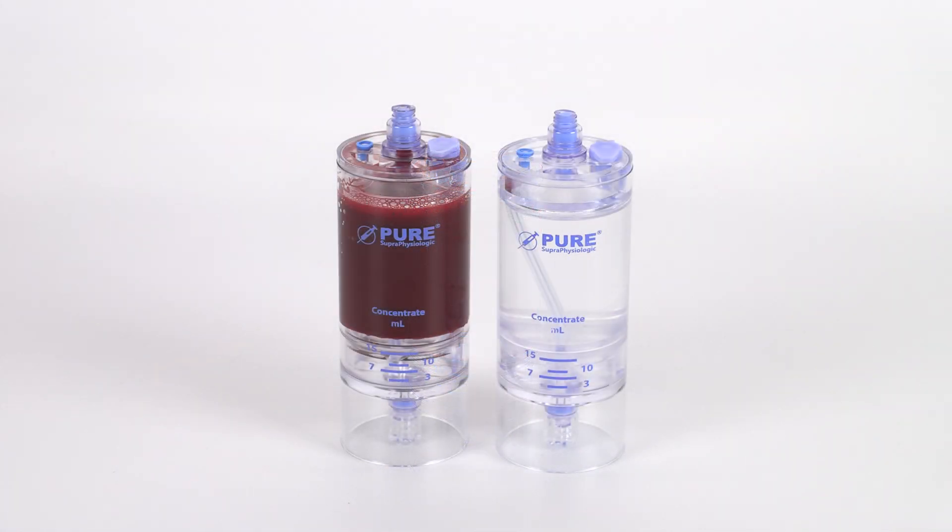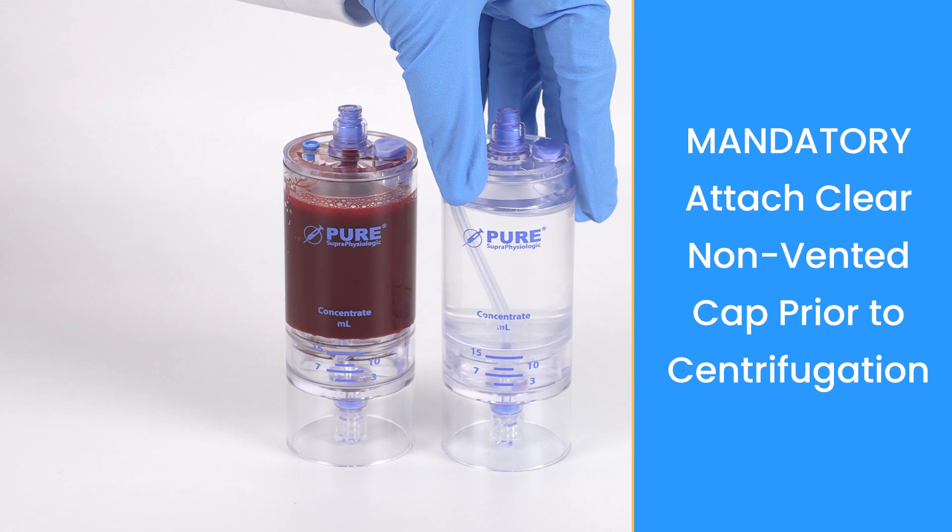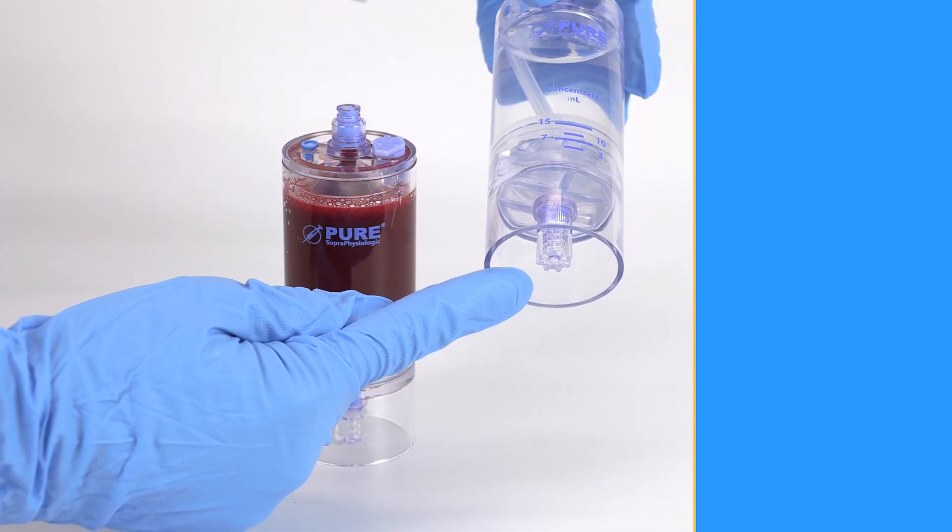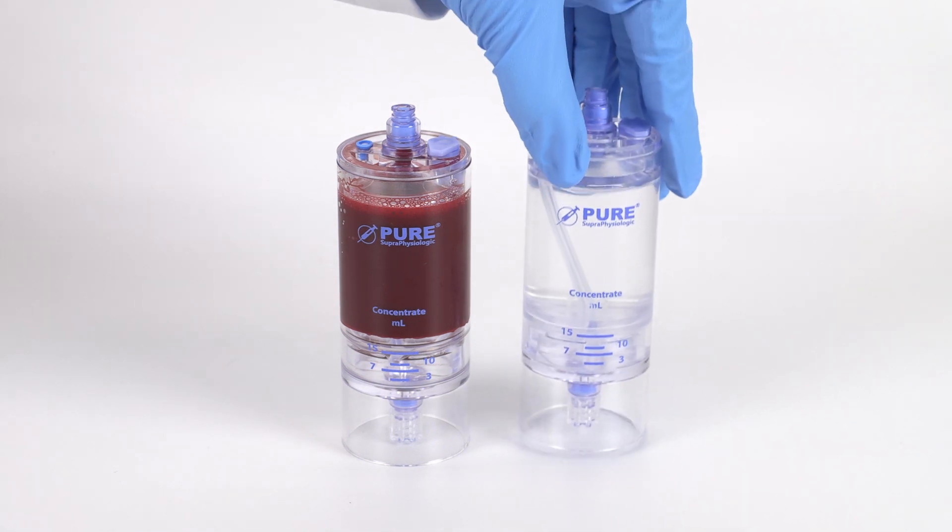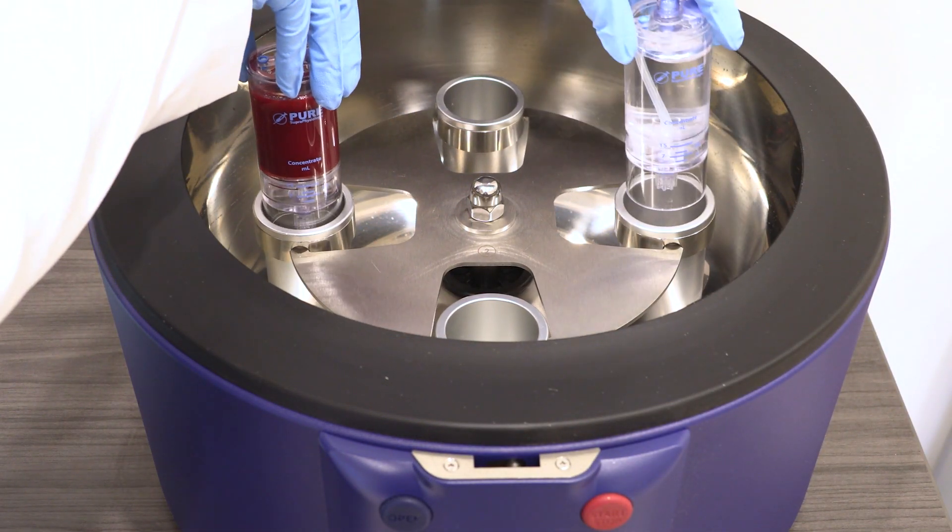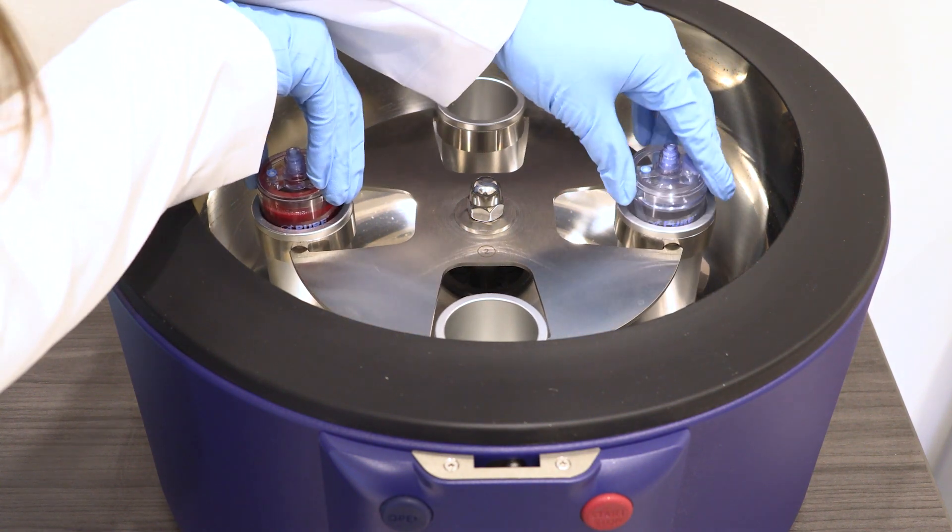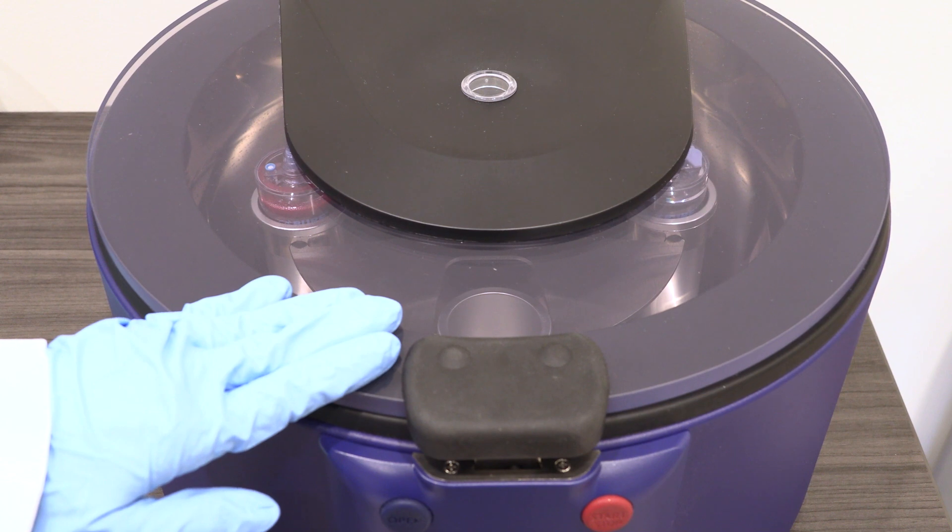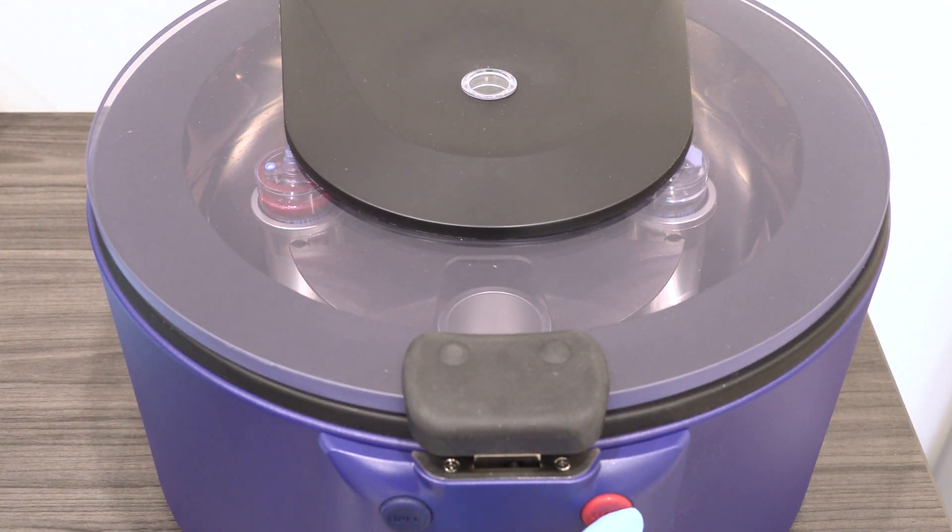Use the counterbalance device to counterbalance with equal volume. Be sure to always place the clear non-vented cap to the bottom port of the counterbalance device as well. Place both devices in the centrifuge rotor at opposite ends. Follow the protocol settings provided in the IFU insert. Close the centrifuge lid and press start.